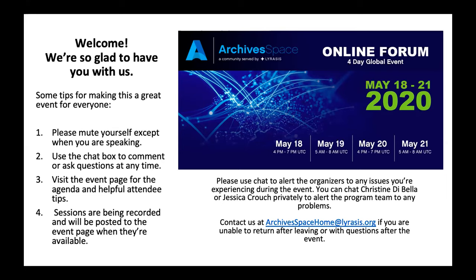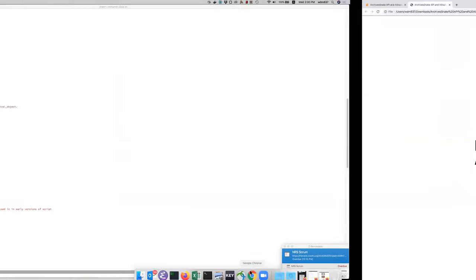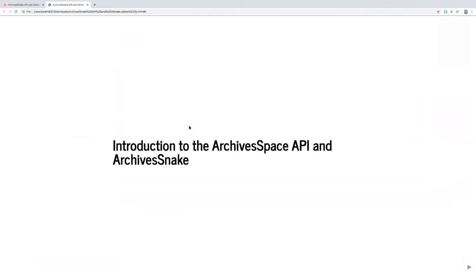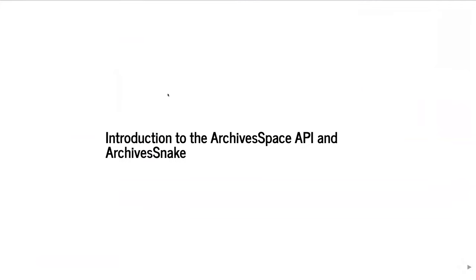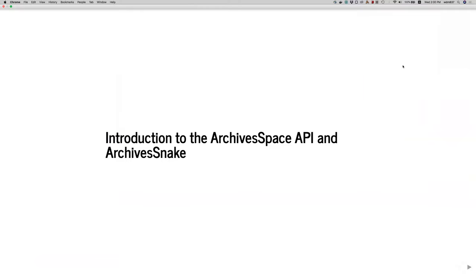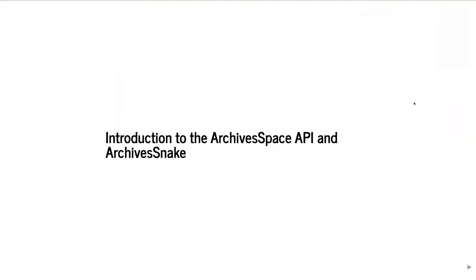In working with ArchivesSpace, there comes a time when one needs to interrogate their data or make changes across a large part or all of their collections. While ArchivesSpace has some affordances built in for bulk editing and reporting, its API can be an invaluable tool able to interrogate and alter any piece of data in the system. Migrations, custom reporting and analysis, bulk edits or deletions, integrations with other software — familiarity with the API makes all of these and more possible, if not necessarily easy.